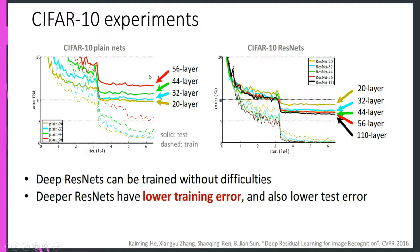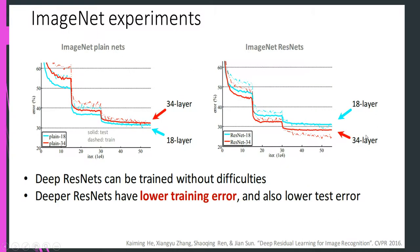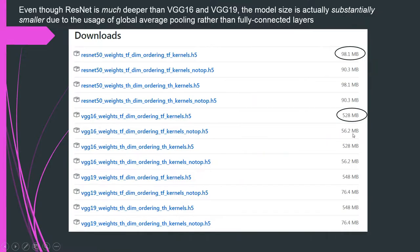From their paper results on CIFAR and ImageNet: in the residual network, going deeper reduces the error rate, whereas in plain networks the error increases with more layers. On ImageNet, ResNet's error rate reduces with increasing layers. Also, compared to VGG-16 or VGG-19, the model size is much smaller — VGG-16 weights are 528 MB including the top fully connected layers, while ResNet is just 98 MB. This is because ResNet uses average pooling layers instead of fully connected layers.